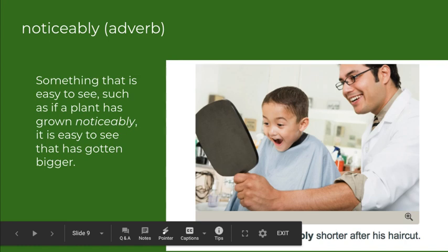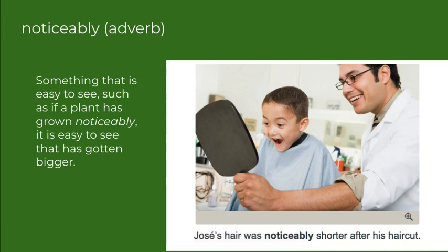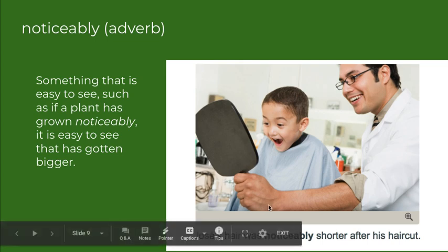The next word is noticeably. It is an adverb, so it describes how someone or something does something, and it usually ends with L-Y. Something that is easy to see is noticeable — for example, if a plant has grown noticeably, it is easy to see that it has gotten bigger. In this picture, Jose's hair was noticeably shorter after his haircut.